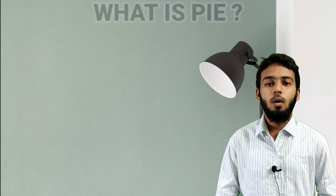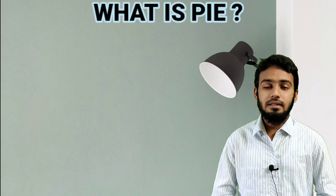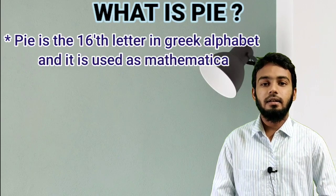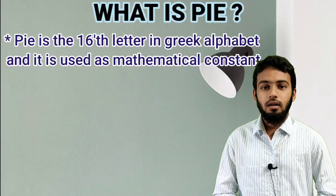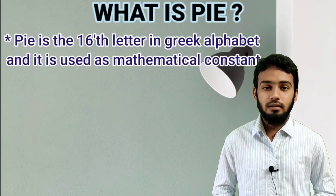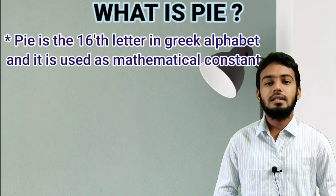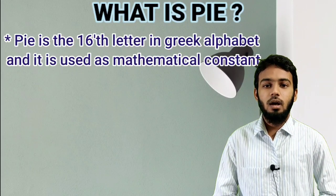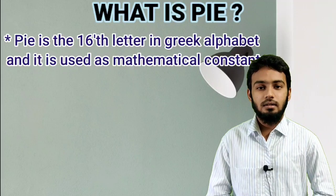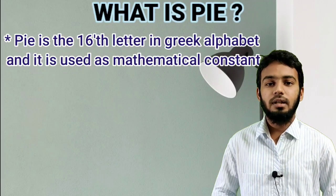First of all, what is Pi? Pi is the sixteenth letter in Greek alphabet. In English alphabet, P is the sixteenth letter. In the same way, in Greek alphabet, Pi is the sixteenth letter. Pi is used as a mathematical constant in mathematics.